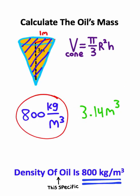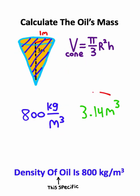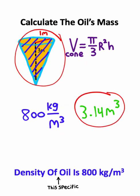The density of this oil is 800 kilograms per cubic meter, and the volume this oil takes up is 3.14 cubic meters.